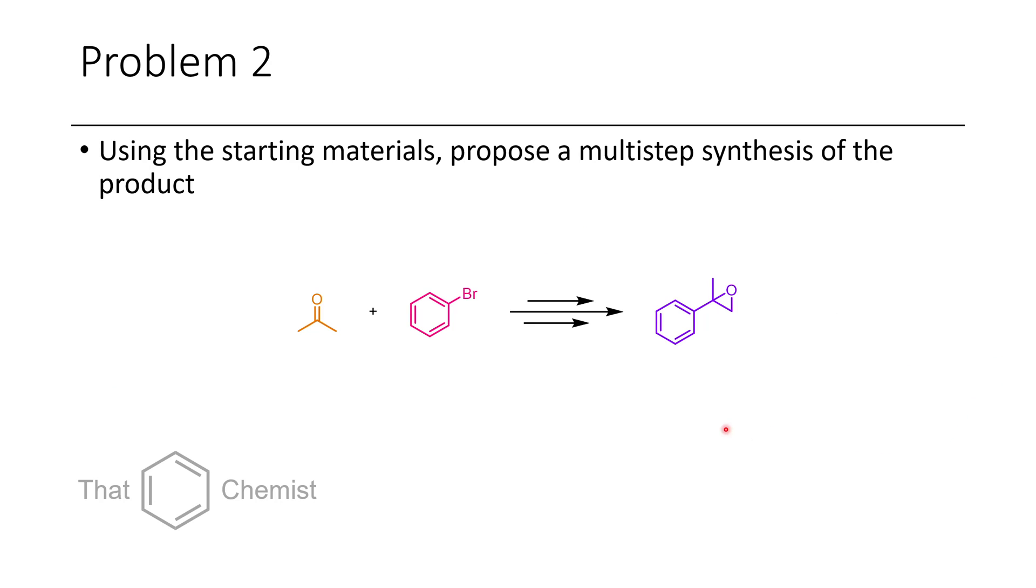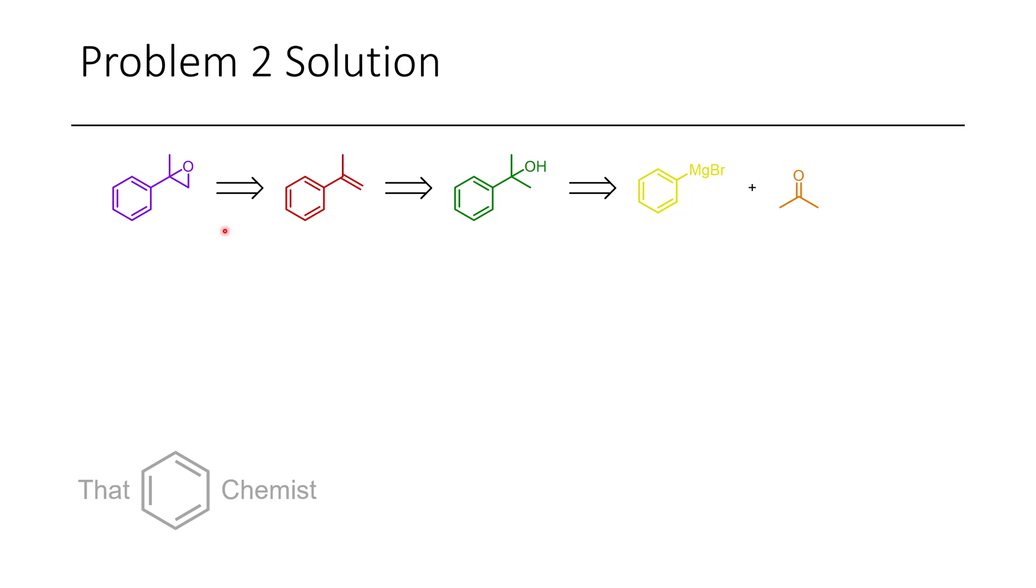In the next problem we have bromobenzene and acetone and we have to make alpha methyl styrene oxide. In the backwards direction first we would want to do an epoxidation to get back to this styrene oxide. From this there could be an elimination reaction from something like this alcohol. And then we would be able to do a Grignard reaction between phenylmagnesium bromide and acetone.